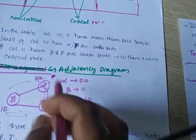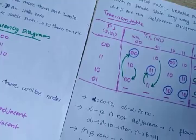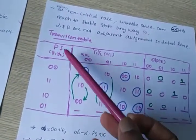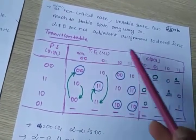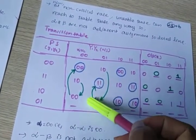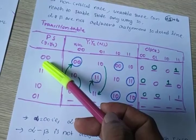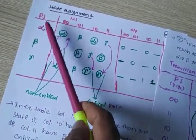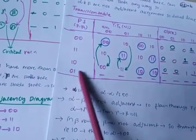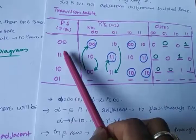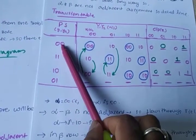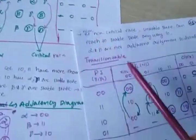The condition is satisfied. Now I write the transition table again: present state, next state Y1 Y2 for inputs X1 X2, and outputs. Consider only the pink color numbers. I am assigning: alpha = 0-0, beta = 1-1, gamma = 1-0. The remaining state 0-1 is a don't-care because I only have three states — that fourth state is unnecessary and vacant. For alpha (0-0) going to alpha: you write 0-0.